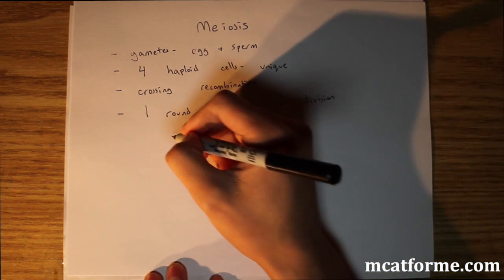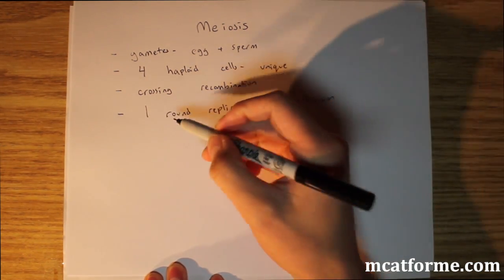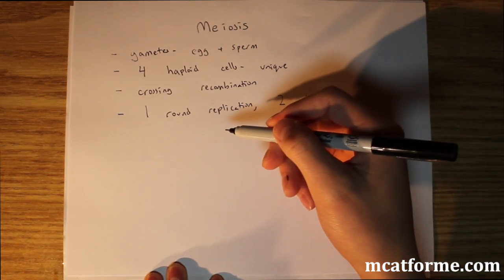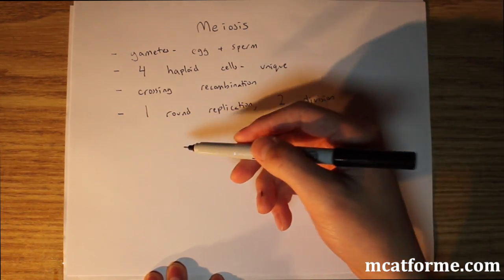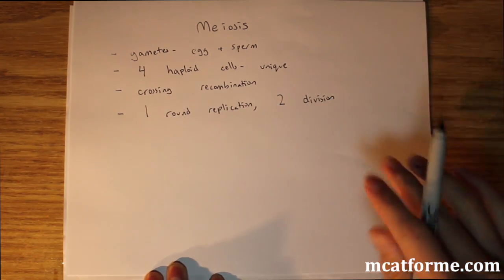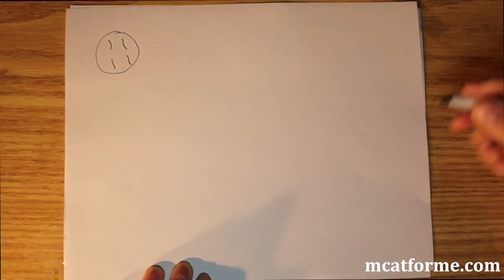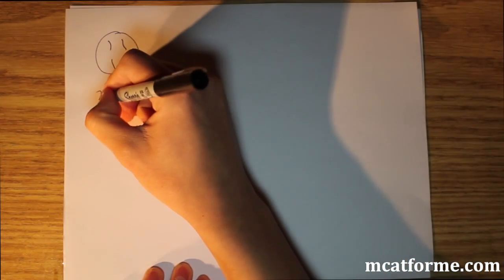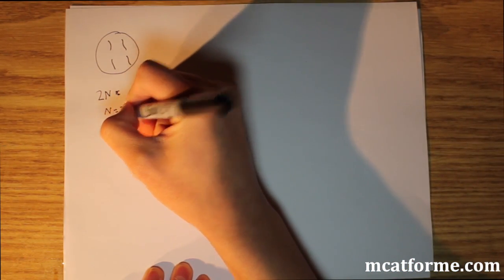So we're going to see prophase 1, anaphase 1, telophase 1, and then prophase 2, metaphase 2, anaphase 2, and telophase 2. We'll start with this cell here — it's going to be 2n, a diploid, where n equals 2.